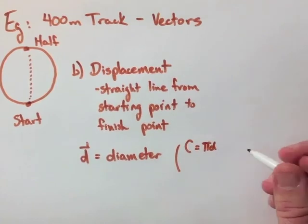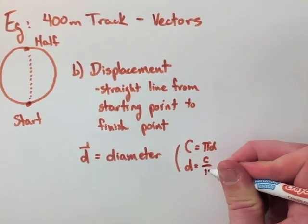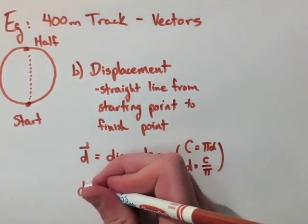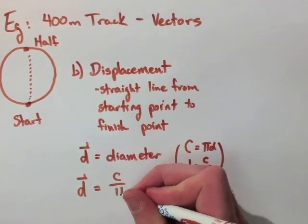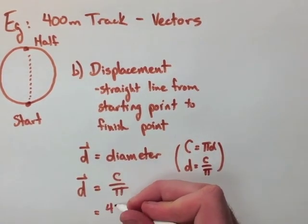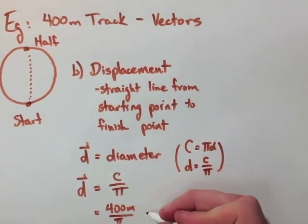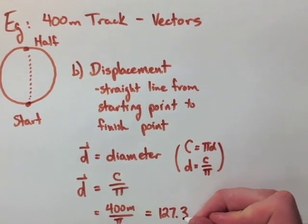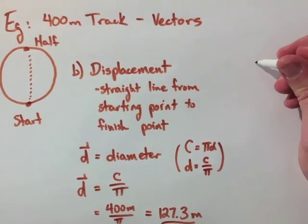We'll use c equals pi d, and then rearrange to find d using c over pi. Now we plug in our circumference, and that's 400 meters over pi, and we get 127.3 meters. That's our displacement.